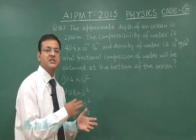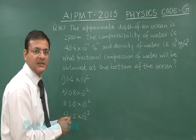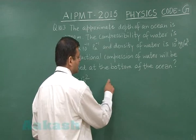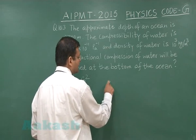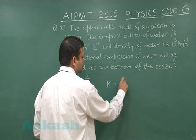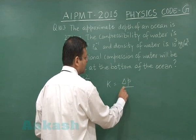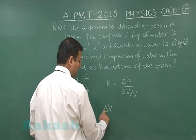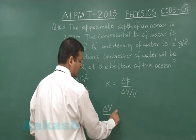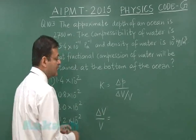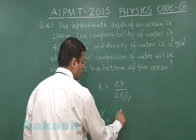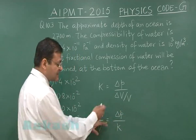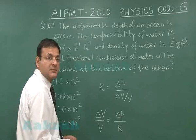Using the standard formula, bulk modulus K equals ΔP divided by (ΔV/V). So ΔV/V equals ΔP/K. Since the inverse of K is compressibility, we can directly use the given compressibility value in our calculation.